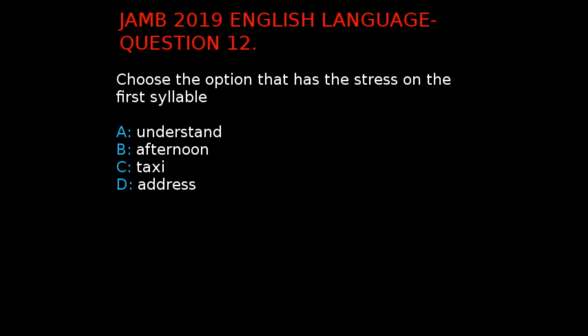Jan 2019 English Language Question 12. The question says, choose the option that has the stress on the first syllable. The options given are: A. Understand, B. Afternoon, C. Taxi, and D. Address. Option A has its stress on the second syllable, which is 'stand', as it is pronounced 'un-STAND'. Option B has its stress on the second syllable, 'noon', as it is pronounced 'af-ter-NOON'.